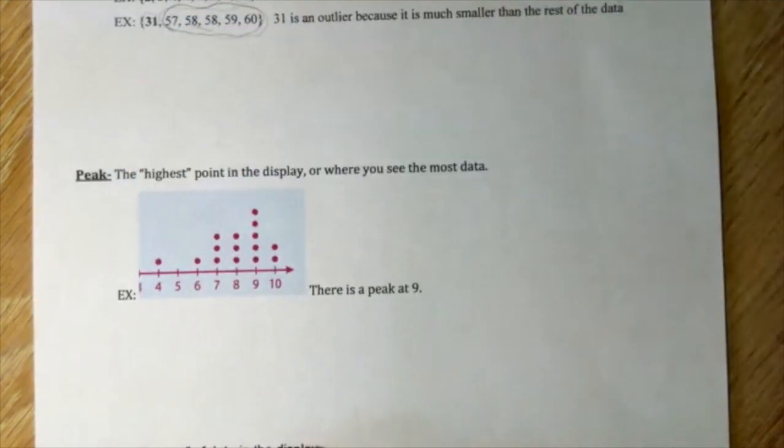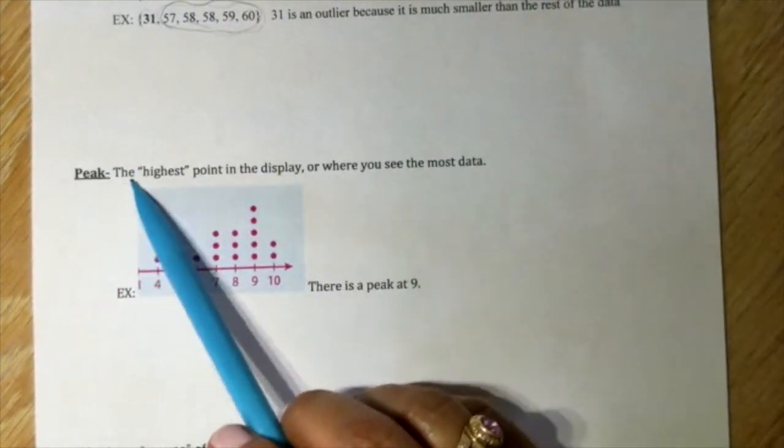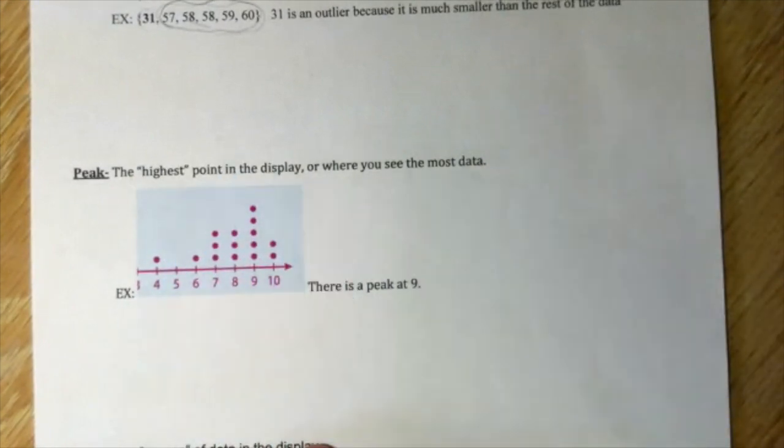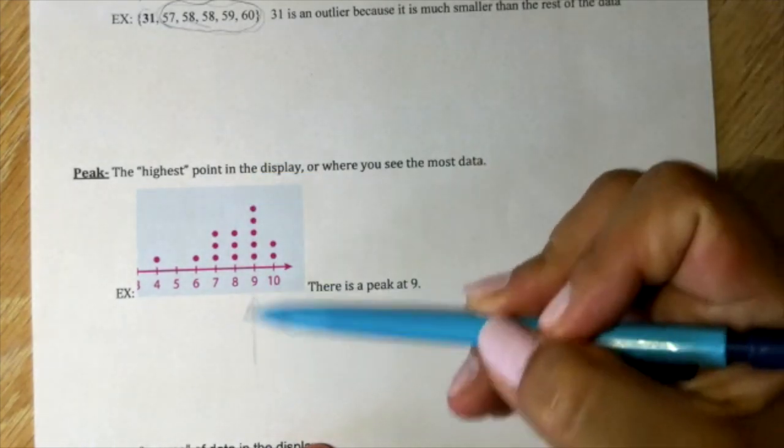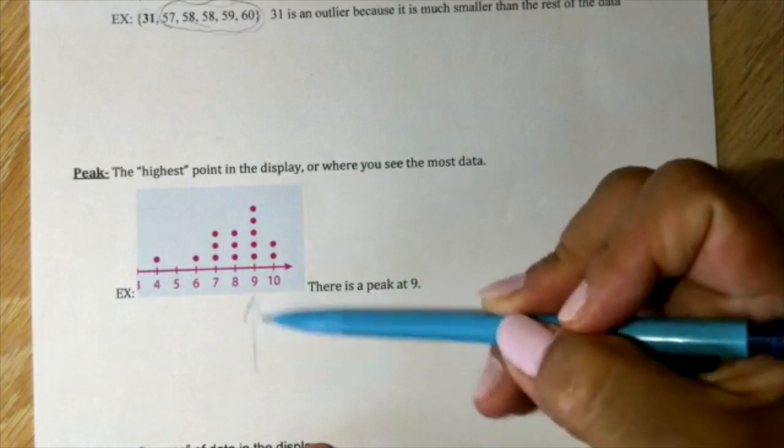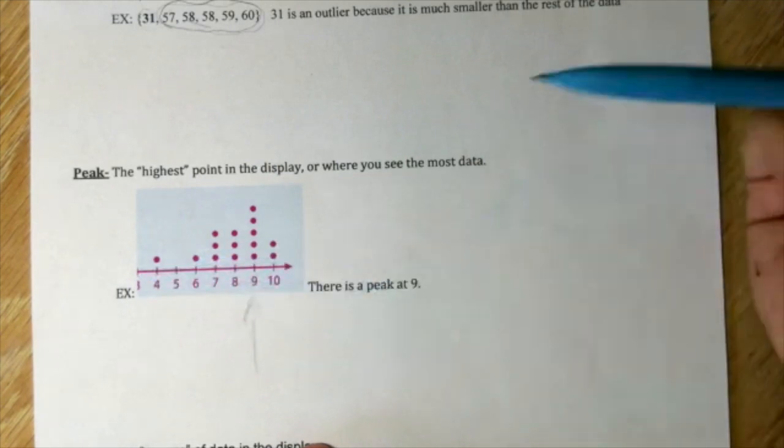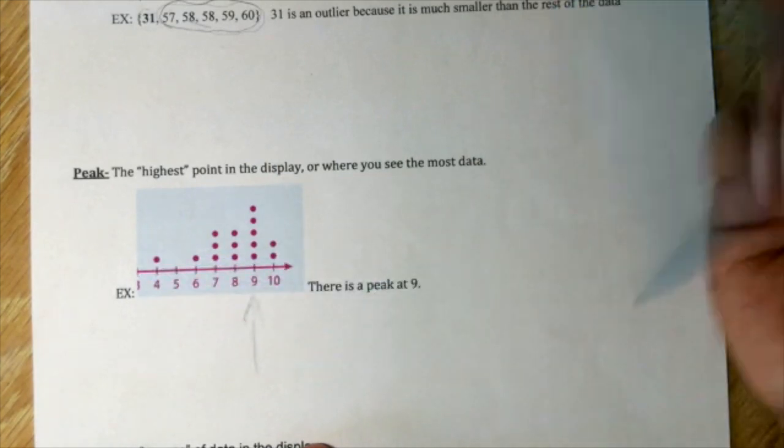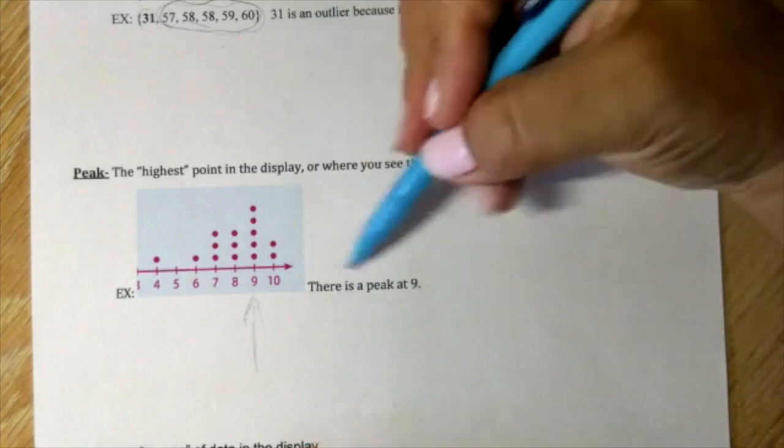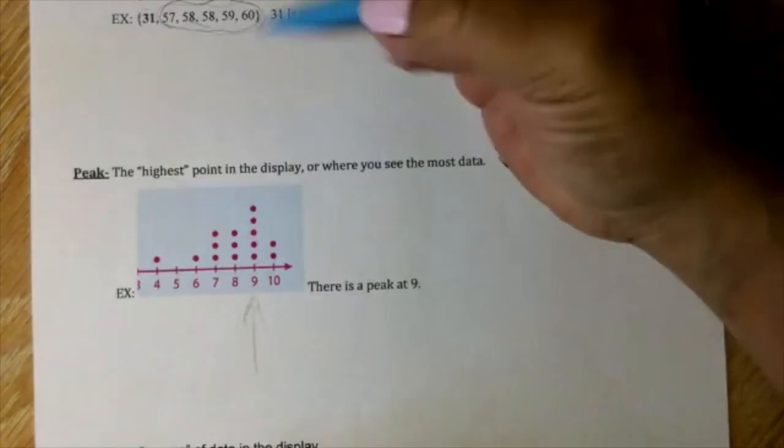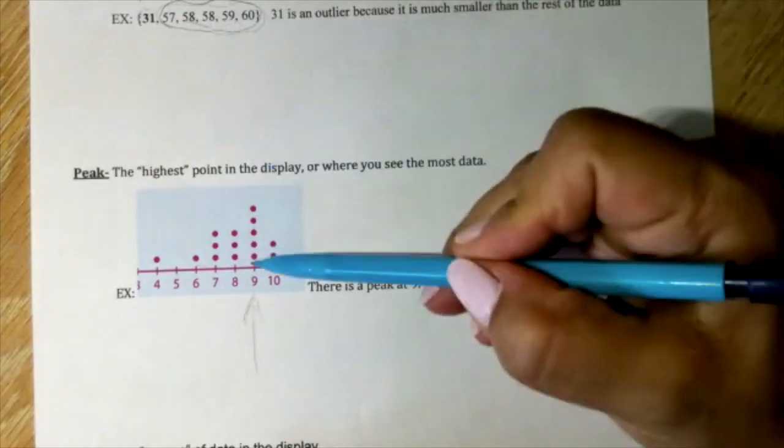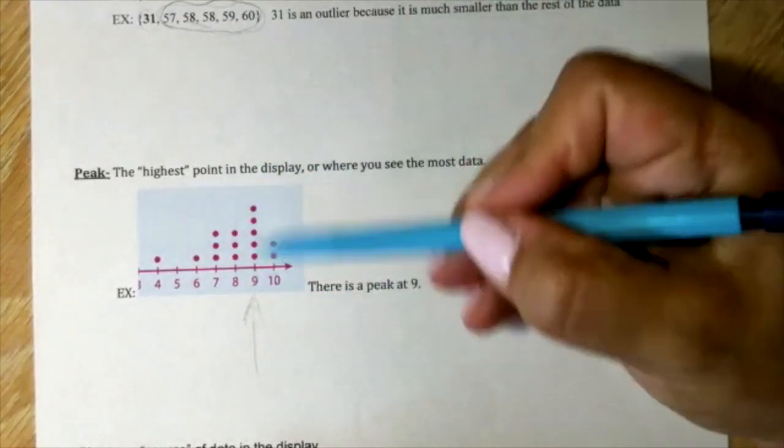Peak - the highest point in the display or where you see the most data. This is an example. There is a peak at nine. That means is the highest point. And you can say the mode will be nine.